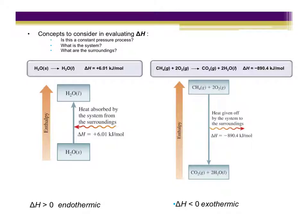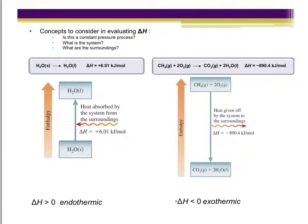Any time we set out to measure heat transfer for a process, we need to consider: is it a constant pressure process or a constant volume process, and what is the system versus the surroundings? Since enthalpy and heat at constant pressure are the same thing, ΔH greater than zero corresponds to an endothermic process, and ΔH less than zero corresponds to an exothermic process.